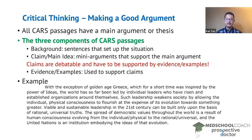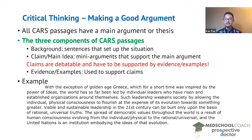Next: 'Such leadership weakens society by allowing the individual physical consciousness to flourish at the expense of its evolution towards something greater.' This sentence is a claim — it's essentially criticizing leadership by an individual, and that can certainly be debated. This passage is claiming that an individual leader is bad for society, but certainly others would claim that individual leaders are good for society. The next sentence — 'Viable and sustainable leadership in the 21st century can be built only upon the basis of rational universal truths' — is another claim. The author is saying that good leadership requires rational universal truths, which is debatable, which is why it's a claim.